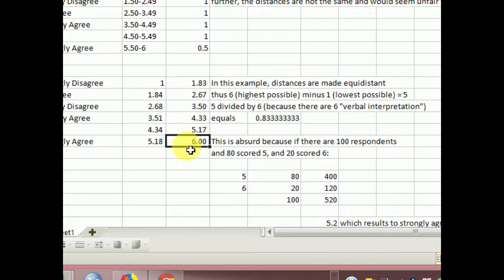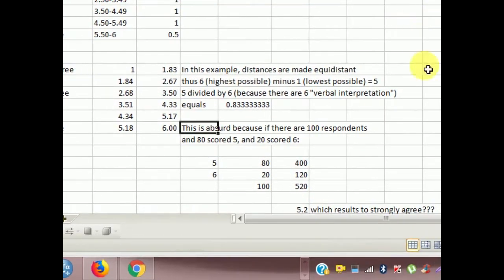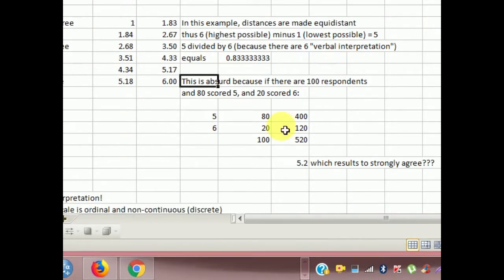But this is absurd, because look at this example of mine. If there are 100 respondents, and 80 scored 5, and only 20 scored 6, then 5 times 80 is 400, 6 times 20 is 120. If you add them, that's 5.2. 5.2 divided by 100, 520 divided by 100 is 5.2, and they become strongly agree. But remember, only 80% scored agree. Only 20% scored strongly agree. But then, if you use this scale, they become strongly agree.